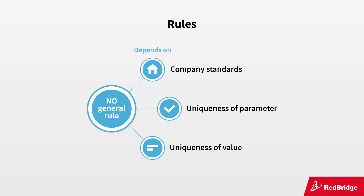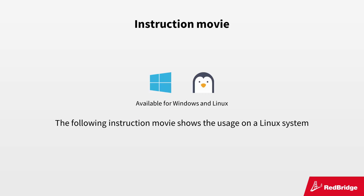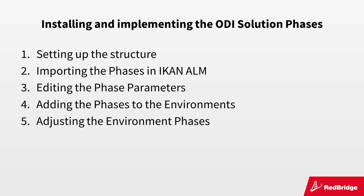If the value is different for each environment, you could specify it on environment level. If the value is the same for all levels and environments on a machine, it might be interesting to define the parameter on machine level. The installation and implementation of the ODI solution phases is done in a few simple steps. First, you import the phases in the ICAN-ALM interface and specify the global parameter values in the global administration section. Next, you add the phases to the different environments and, if required, adjust the environment parameters.